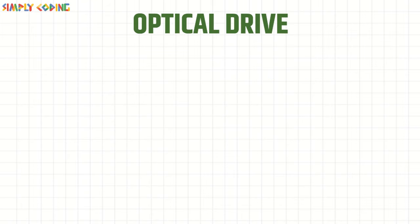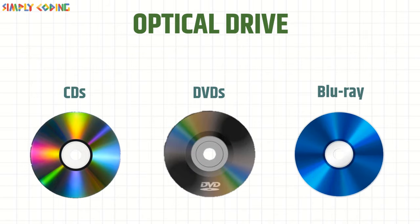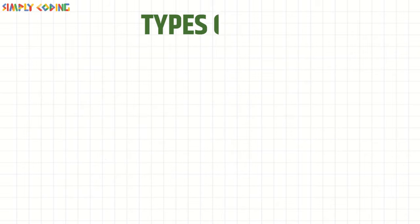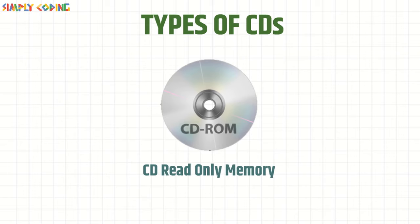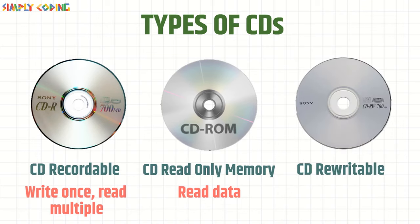Next are optical storage devices, which include CDs, DVDs, and Blu-ray disks. They use laser and light to store data. CD stands for compact disk. They are portable and can store up to 700 MB of data. They come in three types: CD-ROM or CD read-only memory, from where you can only read data; CD-R or CD recordable, where data can be written only once and then read multiple times; and CD-RW or CD re-writable, where data can be written multiple times, so it is also known as erasable CD.